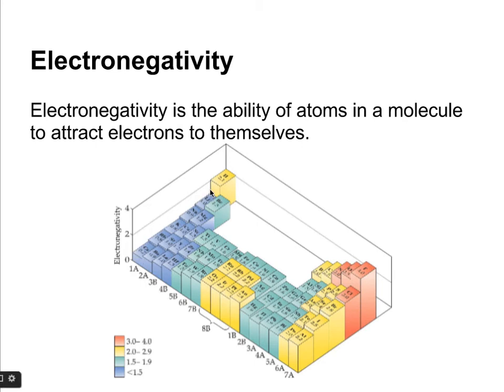So electronegativity increases as you go left to right across the periodic table and it decreases as you go top to bottom. That's another trend on the periodic table that you need to know pretty well. You don't have to have the values memorized, but you do need to know the general trend in electronegativity.